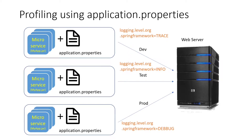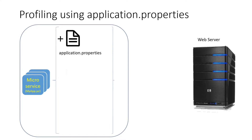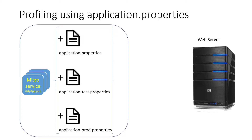You should have a single jar to deploy to three different environments so that the jar is consistent and you cannot break things in different environments. To do that, we create three different application properties inside the single myapp.jar. When deploying to dev you set the default profile active; when deploying to sit you set application-test properties active; when deploying to production you set application-prod.properties as the one to be loaded.